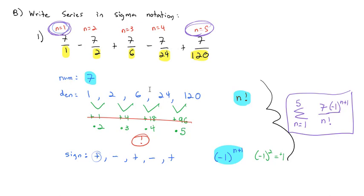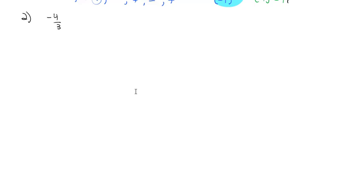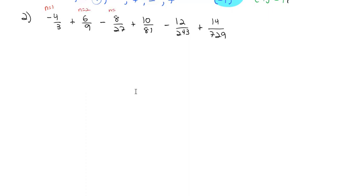Let's try one more example. Let's take the series: negative 4/3 plus 6/9 minus 8/27 plus 10/81 minus 12/243. We'll number the terms n equals 1 through 5. Since there are fractions, we'll look at the numerator first. The numerator goes 4, 6, 8, 10, 12, 14 — we're adding 2 each time.